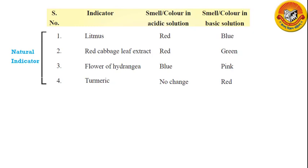Turmeric — we all know the color of turmeric is yellow. When we put turmeric in acidic solution, there is no change in color. But when we put turmeric in a basic solution, its color changes to red.